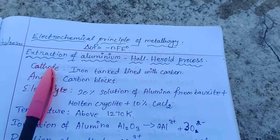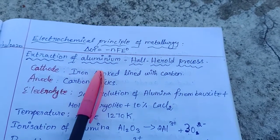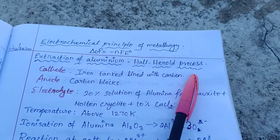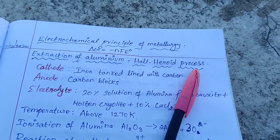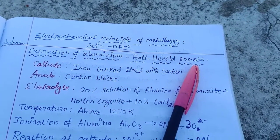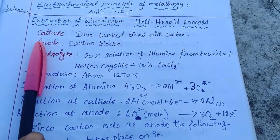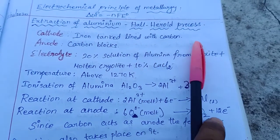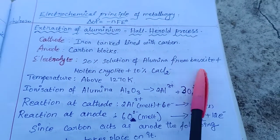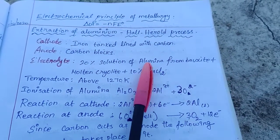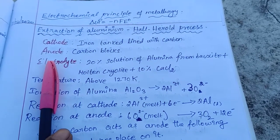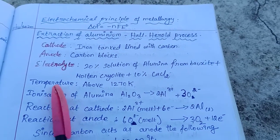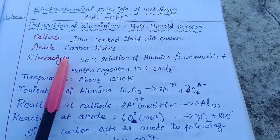One important process is the extraction of aluminum using the electrochemical principle, specifically the Hall-Herold process for extraction of aluminum. The cathode is an iron tank lined with carbon, and the anode consists of carbon blocks. The carbon rods are arranged as the anode.